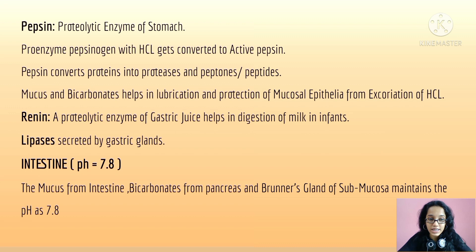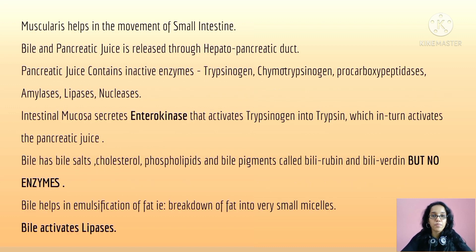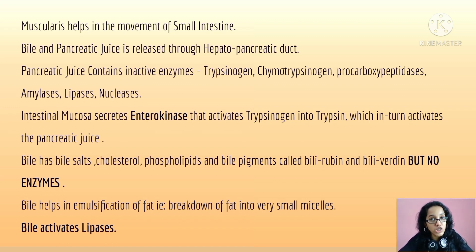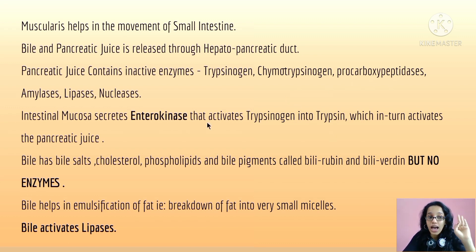Lipases are also secreted by the gastric gland. The small intestine has a pH of 7.8, maintained by mucus from the intestine, bicarbonates from the pancreas, and Brunner's glands of the submucosa. The muscularis layer of the intestine helps in movement of the chyme. Bile and pancreatic juice are released through the hepatopancreatic duct. The pancreatic juice contains inactive enzymes: trypsinogen, chymotrypsinogen, procarboxypeptidase, amylase, lipases, and nucleases.